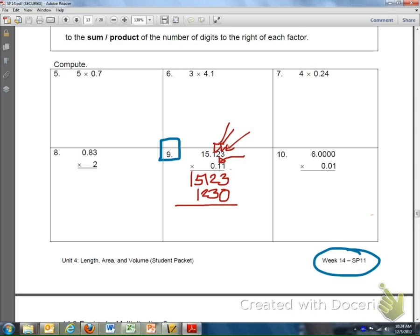1 times 1 is 1. 1 times 5 is 5. And 1 times 1 is 1.